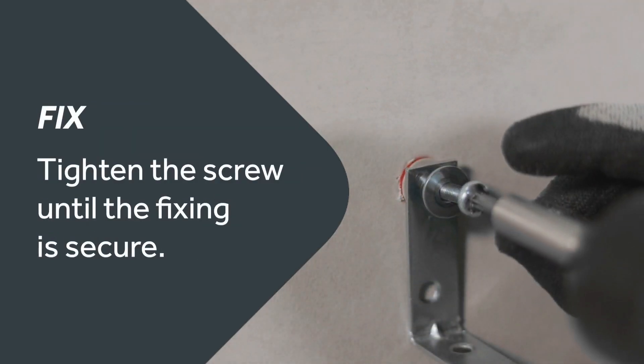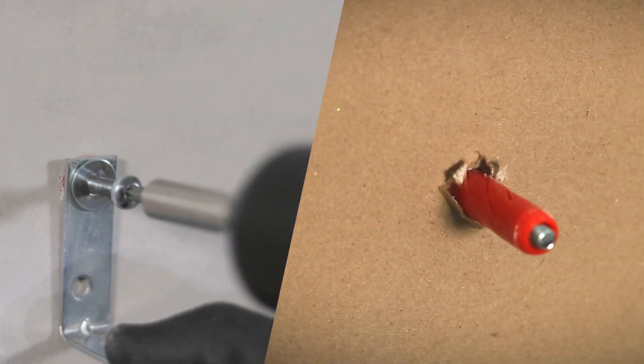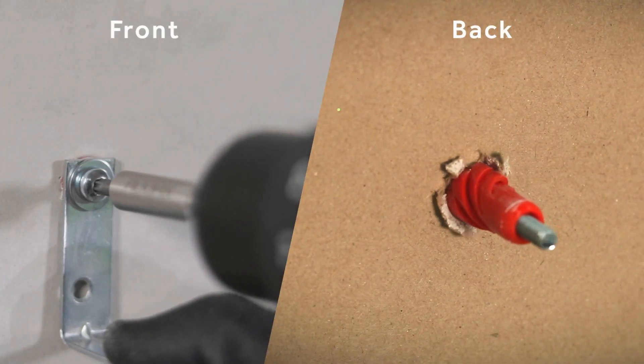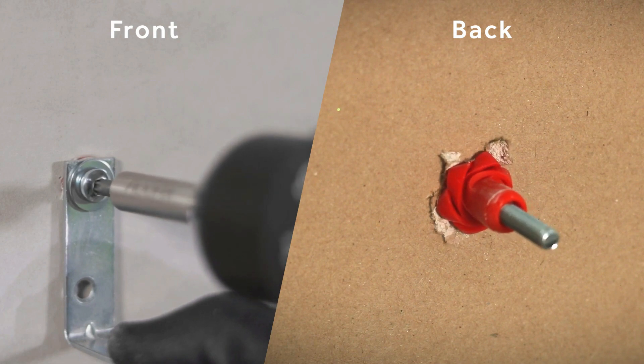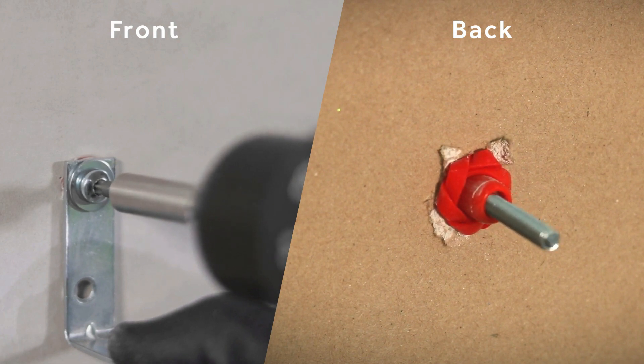Insert the Stella fix screw through the fixing. Tighten the screw until the fixing is secure. It's perfectly fitting for TV brackets, radiators and cabinets.